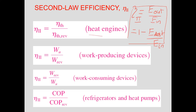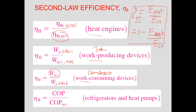More specifically, for a heat engine it is given by actual thermal efficiency divided by reversible efficiency. For work-producing devices like turbines, it is actual work divided by reversible or maximum work. Similarly, for work-consuming devices like compressors, we write it as reversible work divided by actual work. For refrigerators and heat pumps, it is actual COP divided by reversible COP or maximum possible COP. Based on this, we can find out the second law efficiencies of various thermodynamic systems.